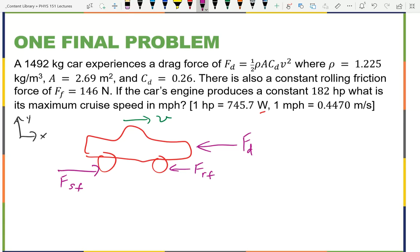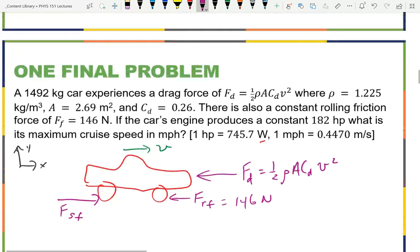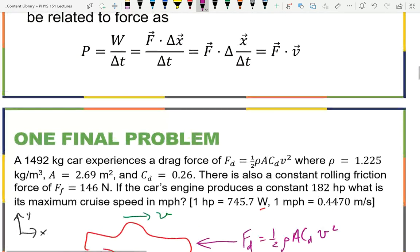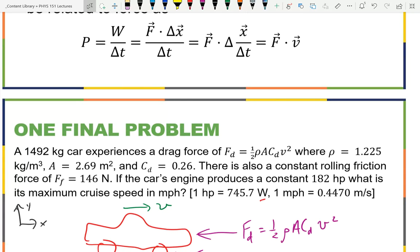So there's our free body diagram. What do we know? We know the force drag is one half rho A C_D V squared, and we're looking for V. So we know everything in there except for the V we're looking for. The force of rolling friction, we know that's 146 newtons. The force moving forward, that's a little trickier. What I have is just the power the car is generating. What is the power? That's 182 horsepower.